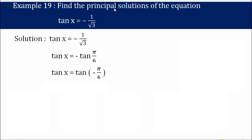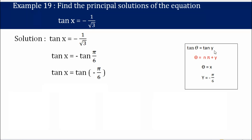Example 19: Find the principal solution of tan x = −1/√3. We can write this as tan x = −tan(π/6), since 1/√3 = tan(π/6). The negative sign shifts into the argument, so tan x = tan(−π/6). This is similar to tan θ = tan y, giving θ = nπ + y, where x = θ and y = −π/6. For n = 0: x = 0·π + (−π/6) = −π/6 = −30°. Since −30° < 0°, this is not a valid solution.